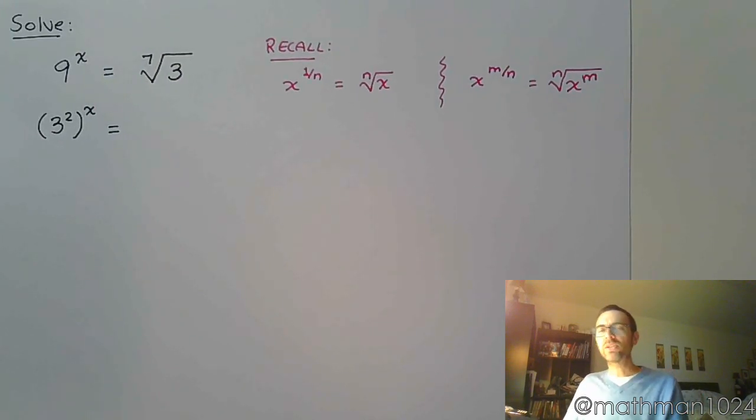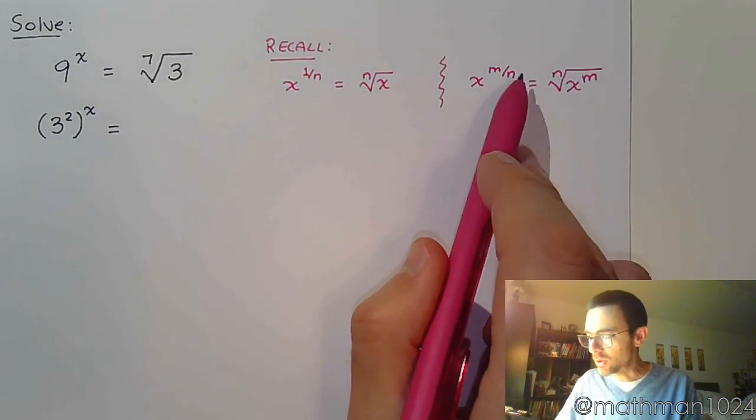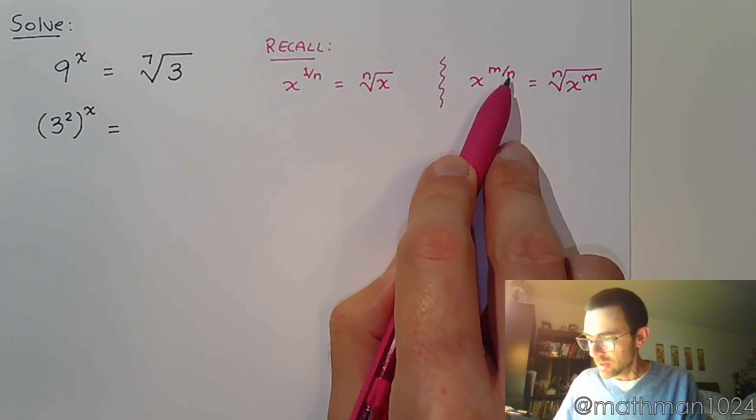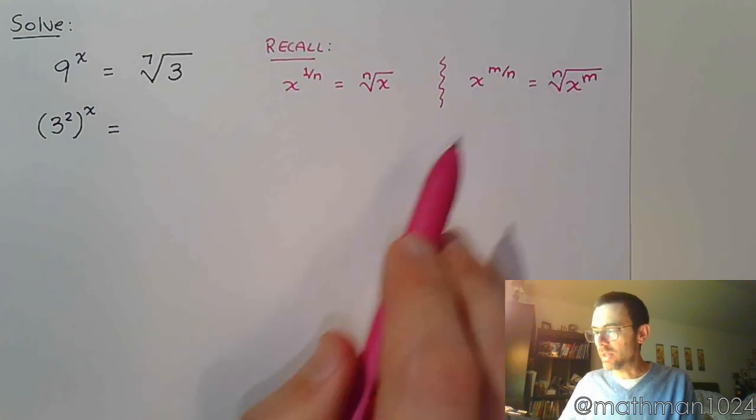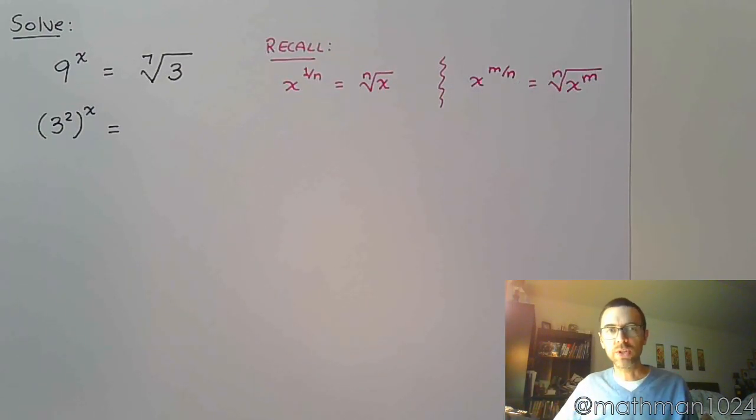And the numerator is your power. Now, right now I'm writing it inside the radical. Typically I would write it on the outside just to help us with simplifying, but for the problems that we're going to be seeing here in this section, I want you to make sure you understand that the index is the denominator of the power, and the numerator of the power is just the big power for that expression.